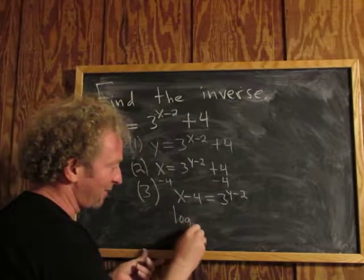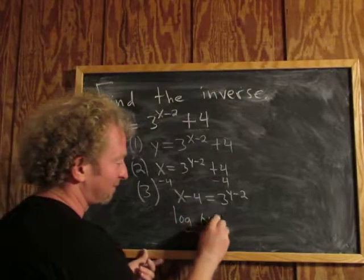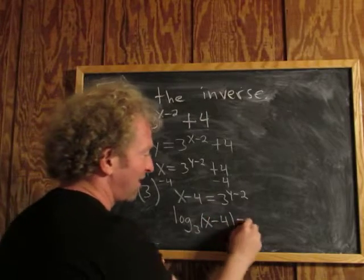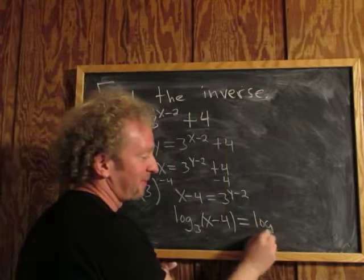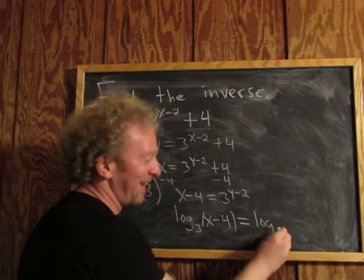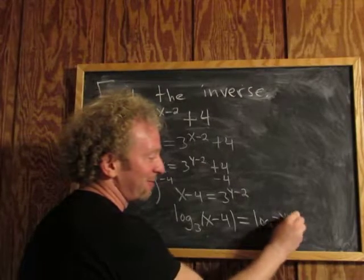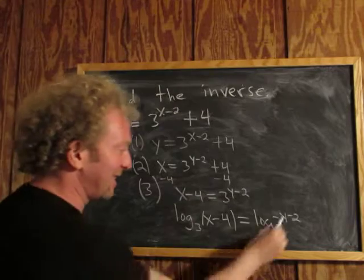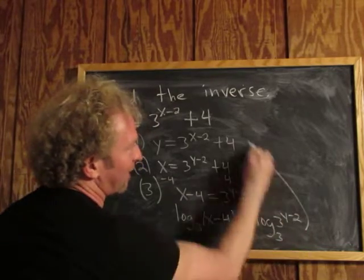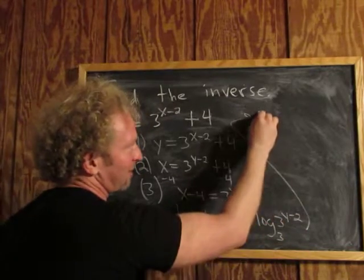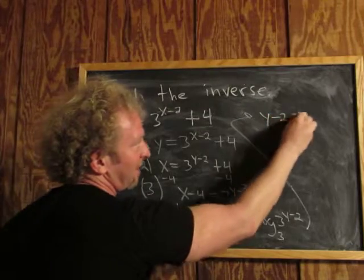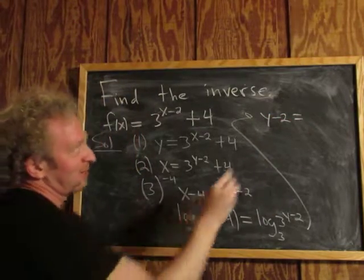Log base 3 of x minus 4 equals log base 3 of 3 to the y minus 2. Cheap chalk. And then these cancel, you just get y minus 2. So I'll write it over here: log base 3 of x minus 4.